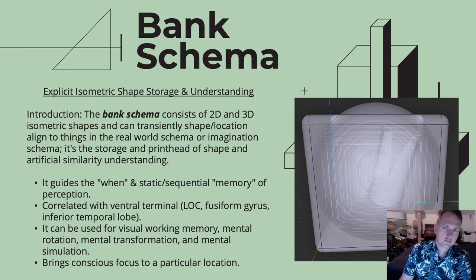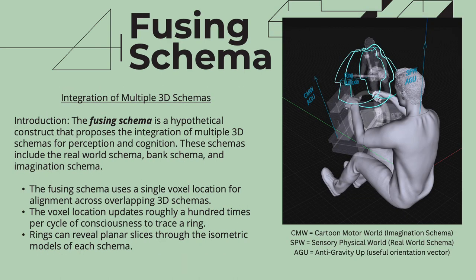The bank schema is the storage of explicit 2D and 3D isometric shape forms. Last of all is the fusing schema — it's the schema which nests all the others inside. In other words, the real world, imagination, and bank schemas are laid over each other in the same shared 3D space, and it's like an ultimate reference system.